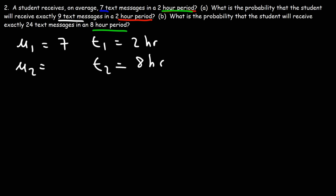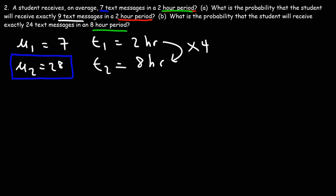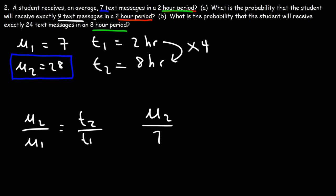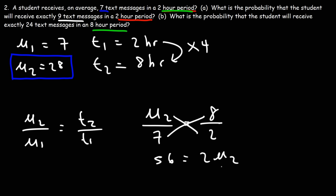To go from 2 to 8 hours, you multiply by 4. So you multiply the mean by 4, giving you 28 — because 7 times 4 is 28. Sometimes the math won't work out as nicely, so you can set up a proportion using the formula: mu2 over mu1 equals T2 over T1. Here mu1 is 7, T2 is 8, T1 is 2. Cross-multiplying gives 7 times 8 equals 56, and 56 divided by 2 gives mu2 equals 28.